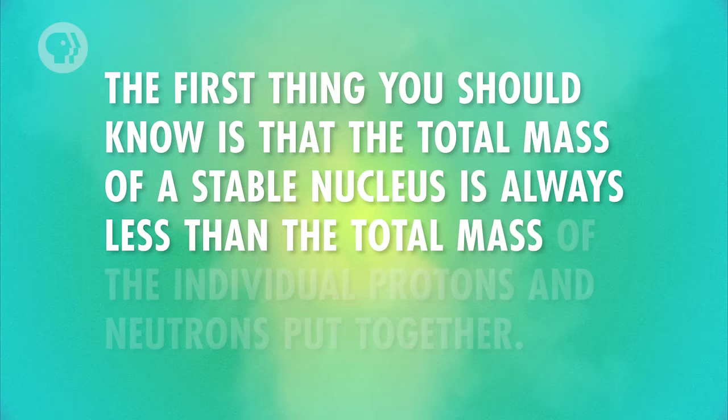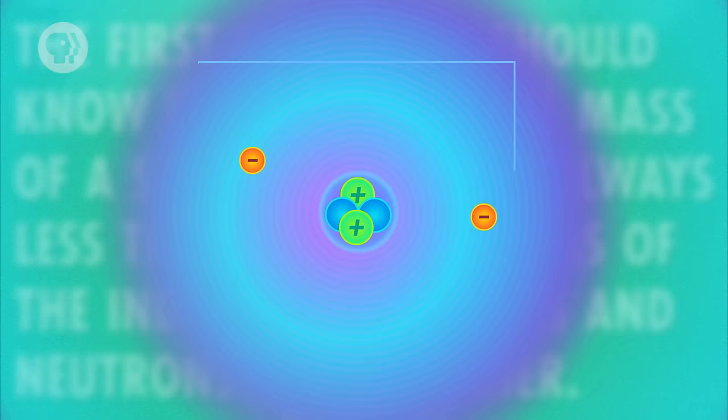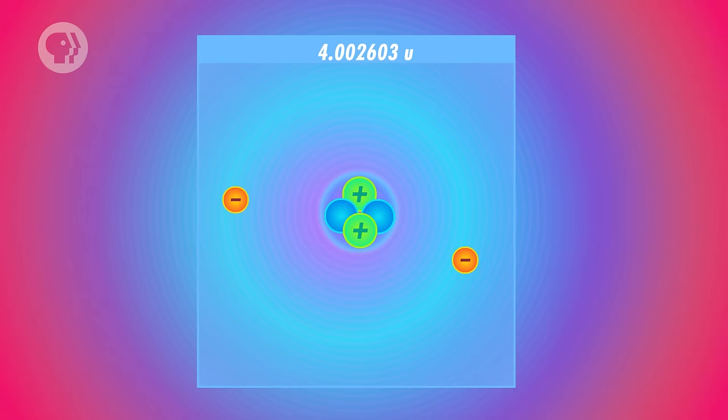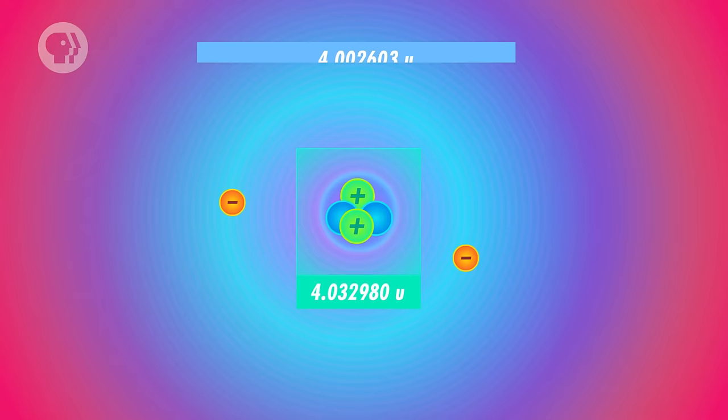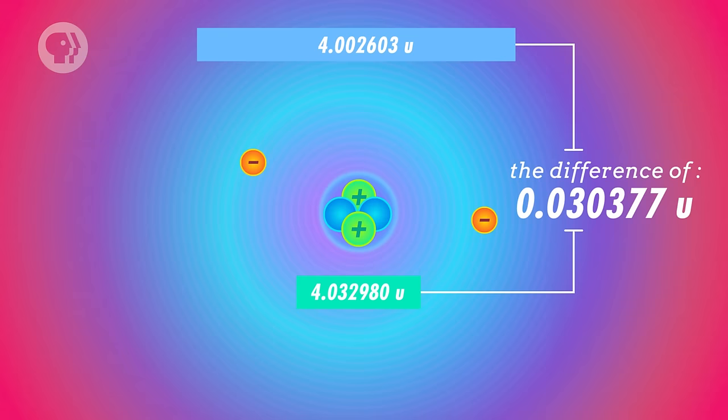Now that we have a notation for describing elements and their isotopes, we can talk about the energy associated with a nucleus and its bonds. The first thing you should know is that the total mass of a stable nucleus is always less than the total mass of the individual protons and neutrons put together. For instance, the mass of a neutral helium atom is 4.00603 unified atomic mass units. But two neutrons and two protons — the component parts of a helium atom — taken together, have a mass of 4.032980 unified atomic mass units. That means that the nucleus of a helium atom has 0.03037 unified atomic mass units less mass than its component parts.